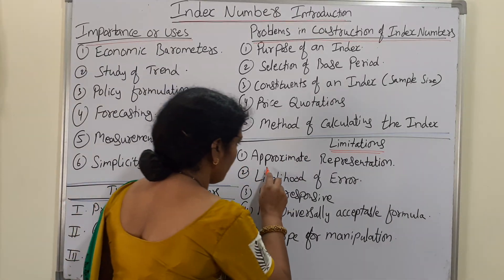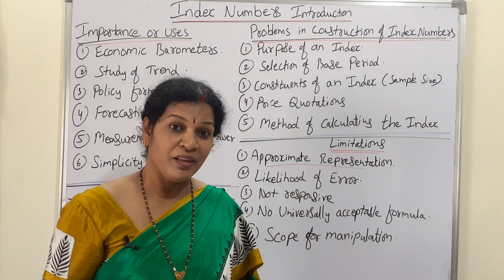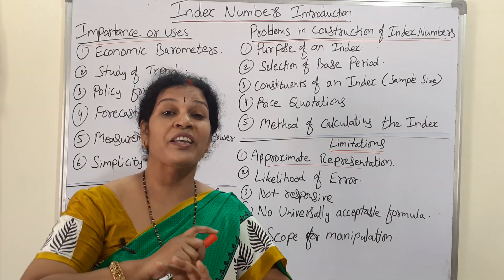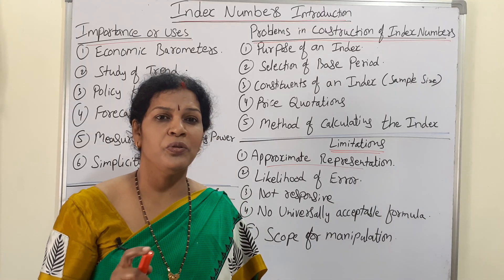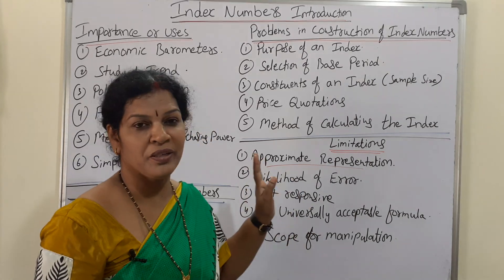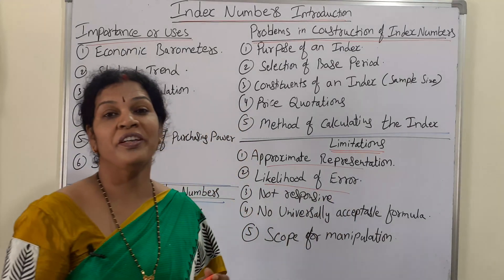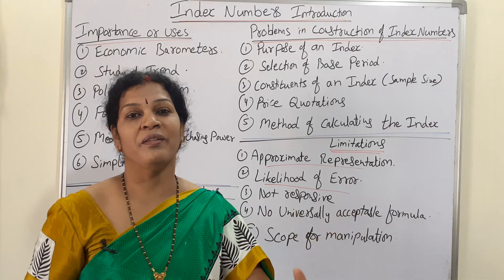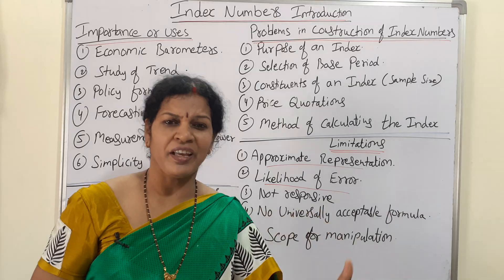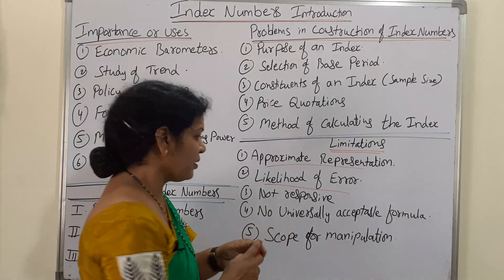Now the limitations of index numbers. The first limitation is approximate representation. Whatever data we have and whatever we calculate, it is not going to give accurate results — there is no universal formula and no universal results; you can't be completely sure. The second limitation is likelihood of error. There is a possibility of error while choosing the data, taking the base year, or selecting the formula — a person who does not have knowledge will definitely introduce errors.